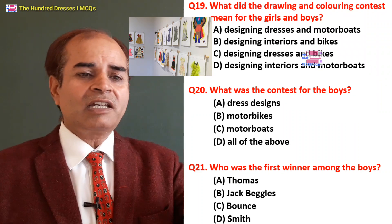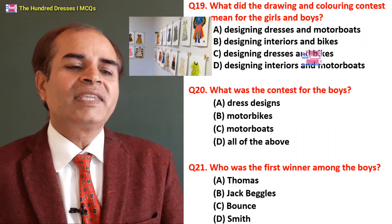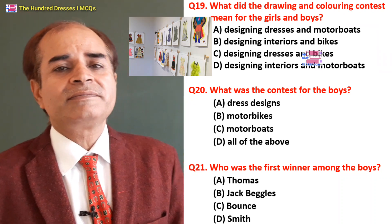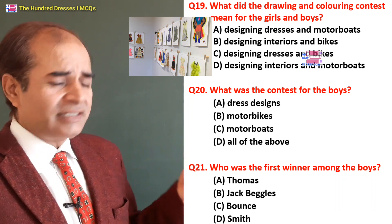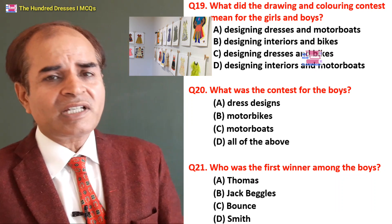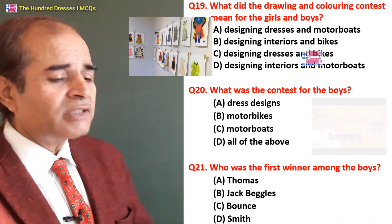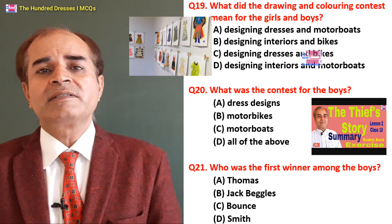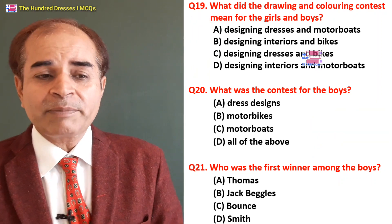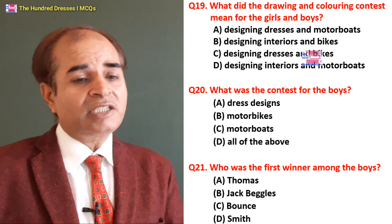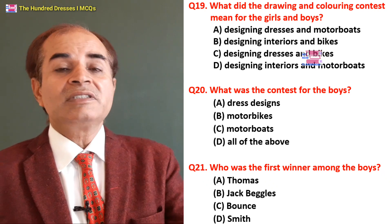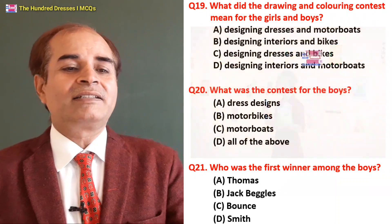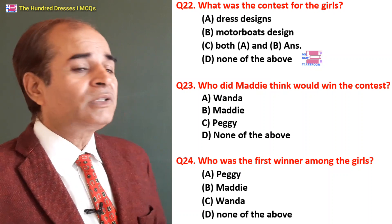Twentieth question: What was the contest for the boys — dress design, motorbikes, or motorboards? It was motorboards — yes. Twenty-first question: Who was the first winner among the boys? Was it Conjita, Jack Boggles, Thomas, or Bounce Smith? It was Jack Boggles who won the boys' contest.